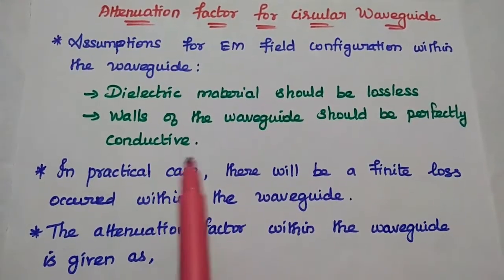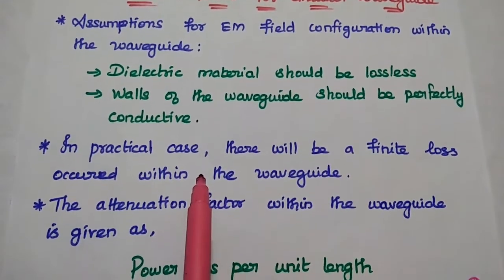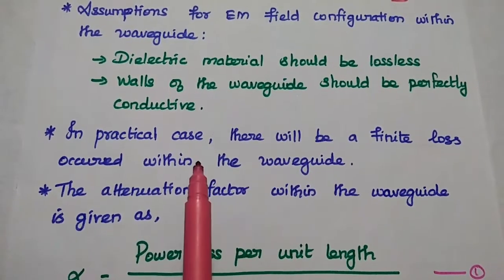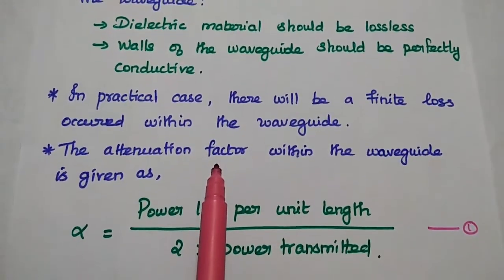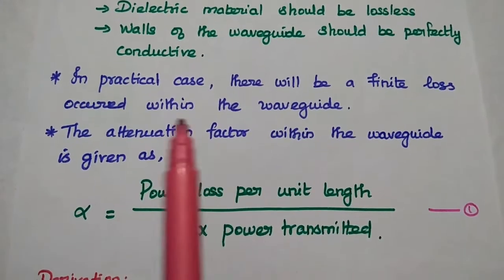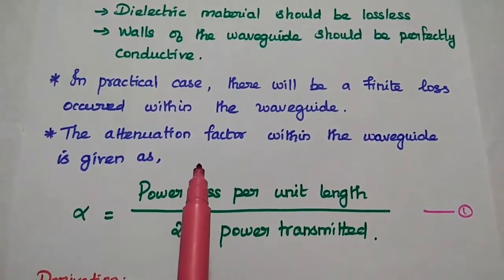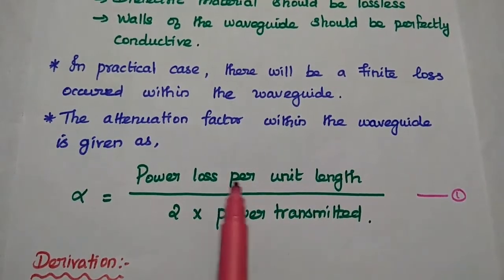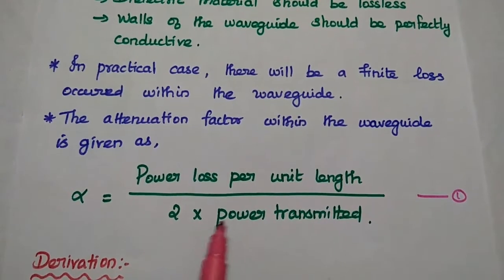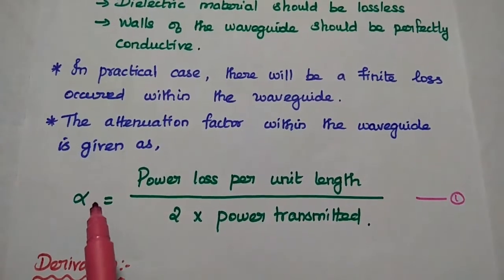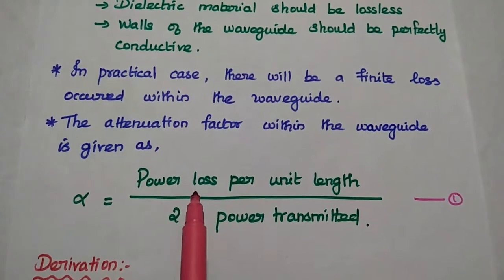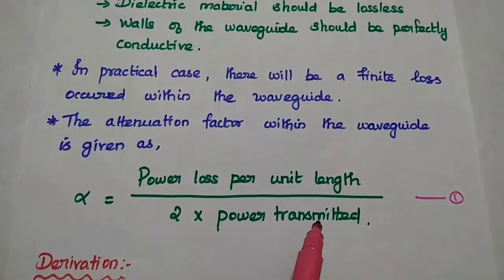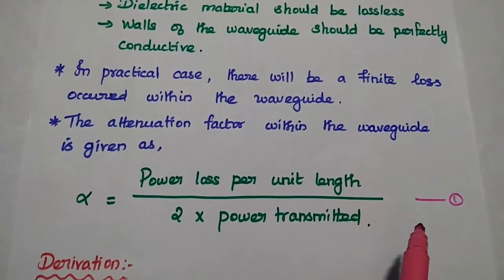But in the practical case, there will be a finite amount of loss occurring within the waveguide. We cannot ensure perfect conduction. So this loss can be represented in terms of attenuation factor. The attenuation factor is defined as the ratio of the power loss per unit length to the total power transmitted. It is given as alpha equals power loss per unit length divided by 2 into power transmitted within the waveguide. Consider this as the first equation.